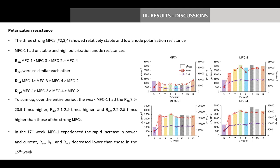Using polarization curves, polarization resistances were calculated to characterize internal resistance distribution in the cell. Anode polarization resistance was the focus since it is closely related to anode biofilm characteristics. The three strong MFCs showed relatively stable and low anode polarization resistance. However, MFC1 had unstable and high anode polarization resistance, and on average over the entire period, MFC1 had the highest anode polarization resistance. Cathode polarization resistance values were similar across cells, and the order of cell internal resistance mirrored that of anode polarization resistance.